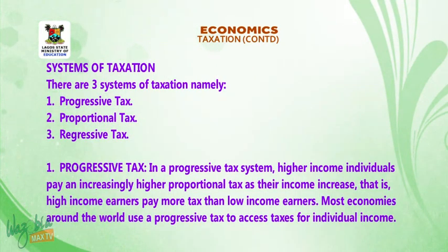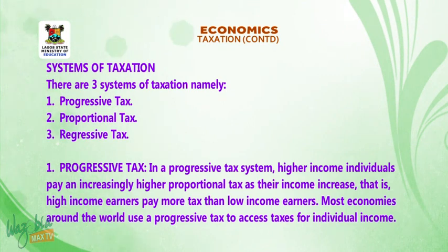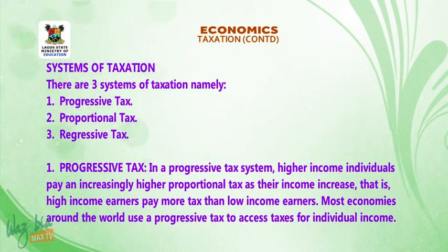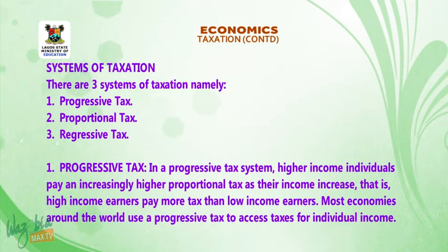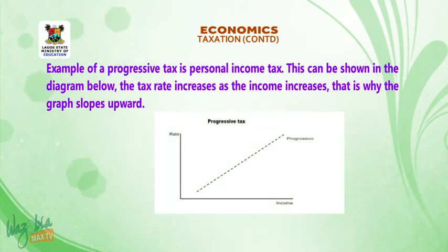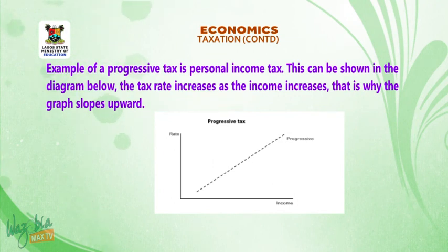There are three systems of taxation, namely: 1. Progressive tax, 2. Proportional tax, 3. Regressive tax. In a progressive tax system, higher-income individuals pay an increasingly higher proportional tax as their income increases. That is, high-income earners pay more tax than low-income earners. Most economies around the world use a progressive tax to assess taxes for individual income. An example of progressive tax is personal income tax. The tax rate increases as the income increases, and that is why the graph slopes upward.